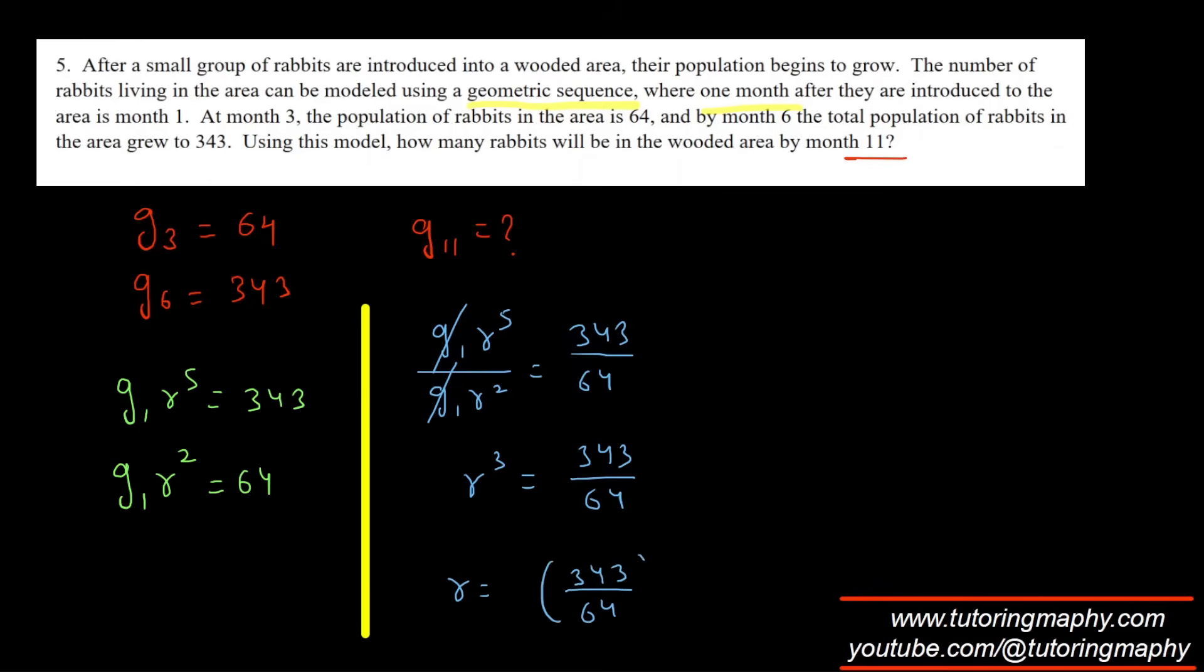Taking the cube root of both sides, the cube root of 343 is 7 and the cube root of 64 is 4, so r equals 7 over 4. But we are not interested in r, we are interested in g11.